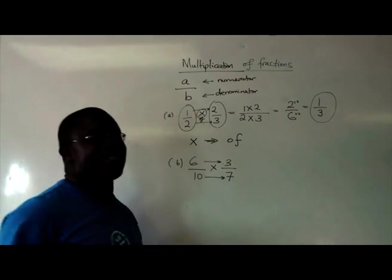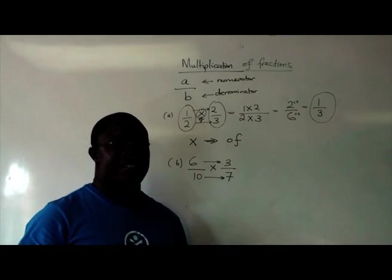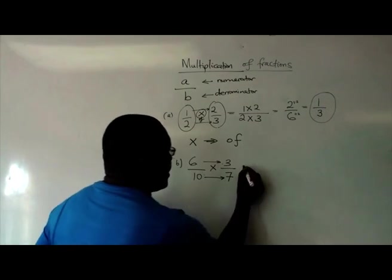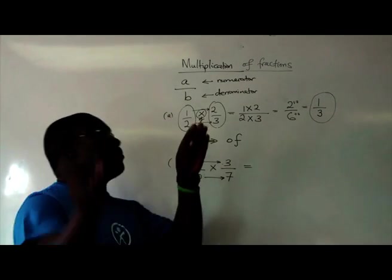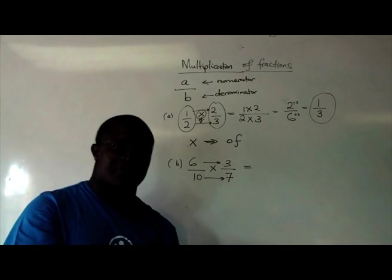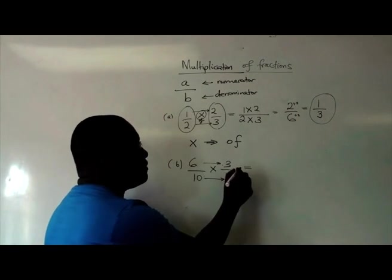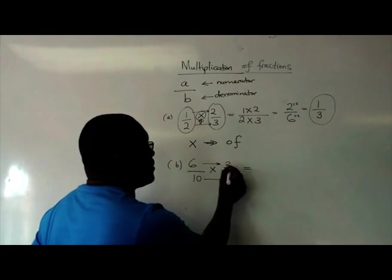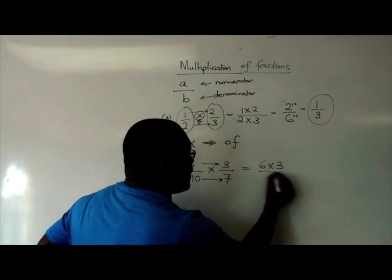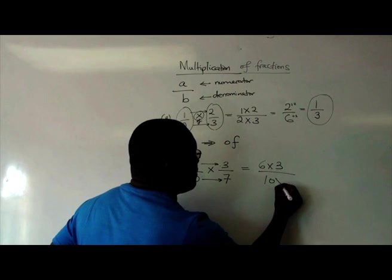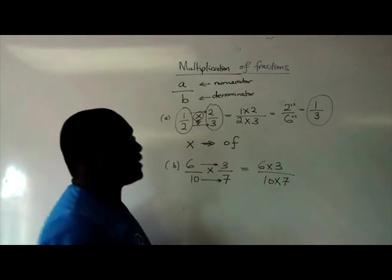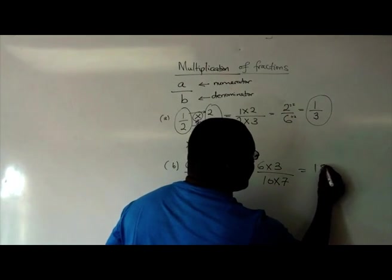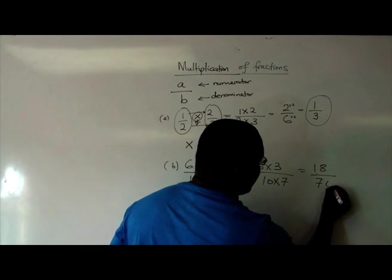So it's a direct operation where you don't have to go through many routes, but it's just numerator to numerator, denominator to denominator. So 6 times 3 divided by 10 times 7, which is equal to 18 out of 70.